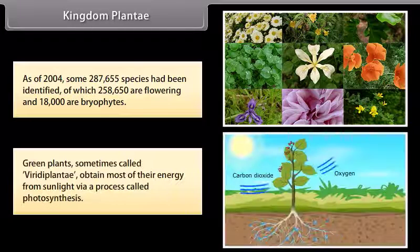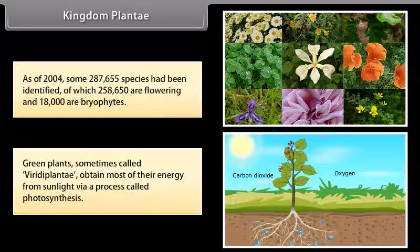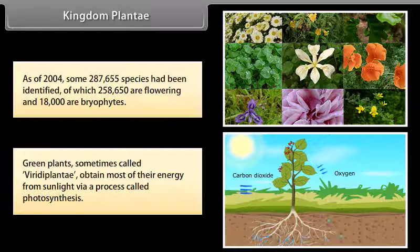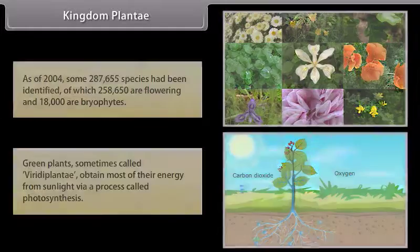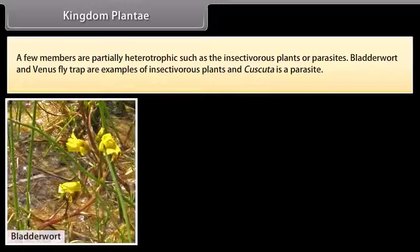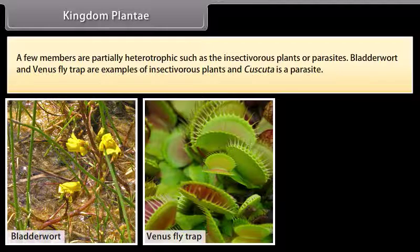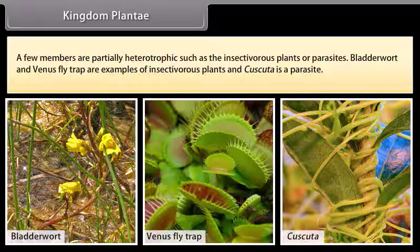Green plants, sometimes called Viridiplantae, obtain most of their energy from sunlight via a process called photosynthesis. A few members are partially heterotrophic, such as insectivorous plants and parasites. Bladderwort and Venus flytrap are examples of insectivorous plants, and Cuscuta is a parasite.